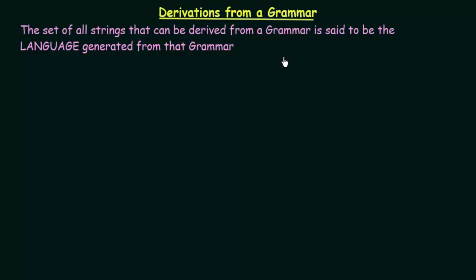What do we mean by derivations from a grammar? The set of all strings that can be derived from a grammar is said to be the language generated from that grammar. So, given a grammar, all the strings that can be derived from it constitute the language generated from that grammar. Let's see a simple example for that.